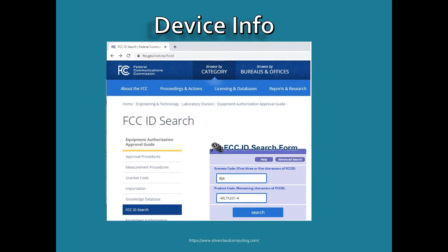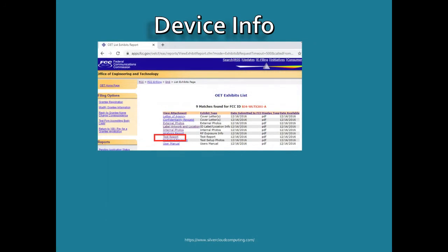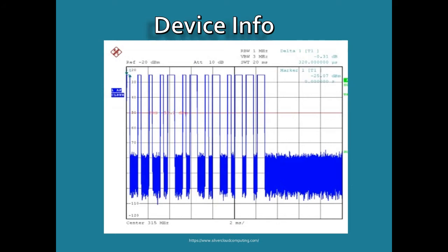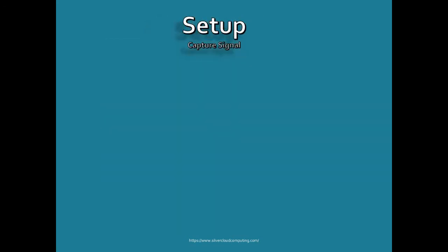The FCC ID is pretty useful. Almost any device that transmits has an FCC ID number, and you can look it up in the FCC database. What you get back are documents describing the device — of particular interest is the test report. The test report tells you what frequency the device transmits on. This one transmits at 315 megahertz; usually these things transmit at 315 or 433 megahertz. The test report also shows what the signal looks like — in this case it's 13 pulses or 13 bits, though the bit pattern may differ slightly between models.